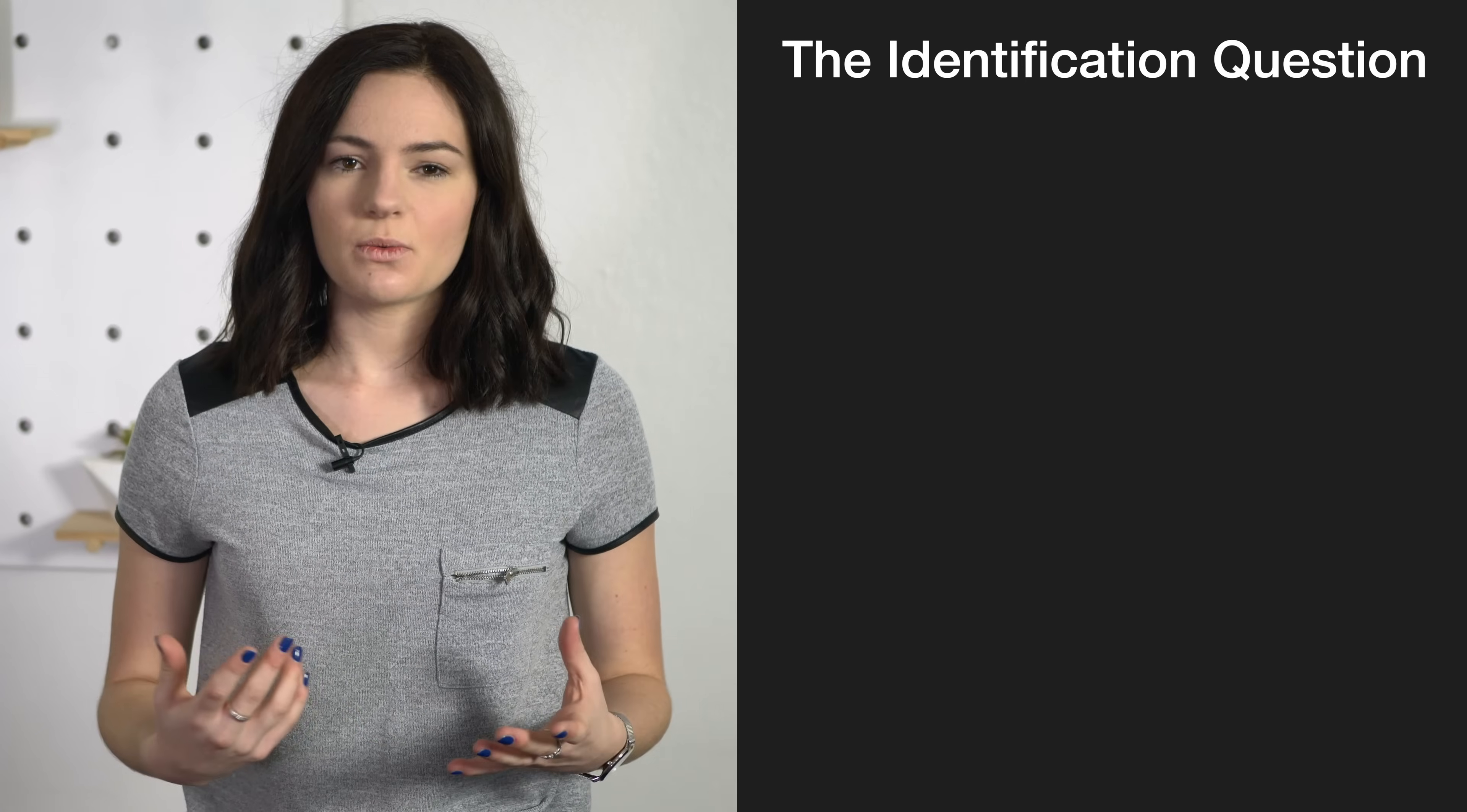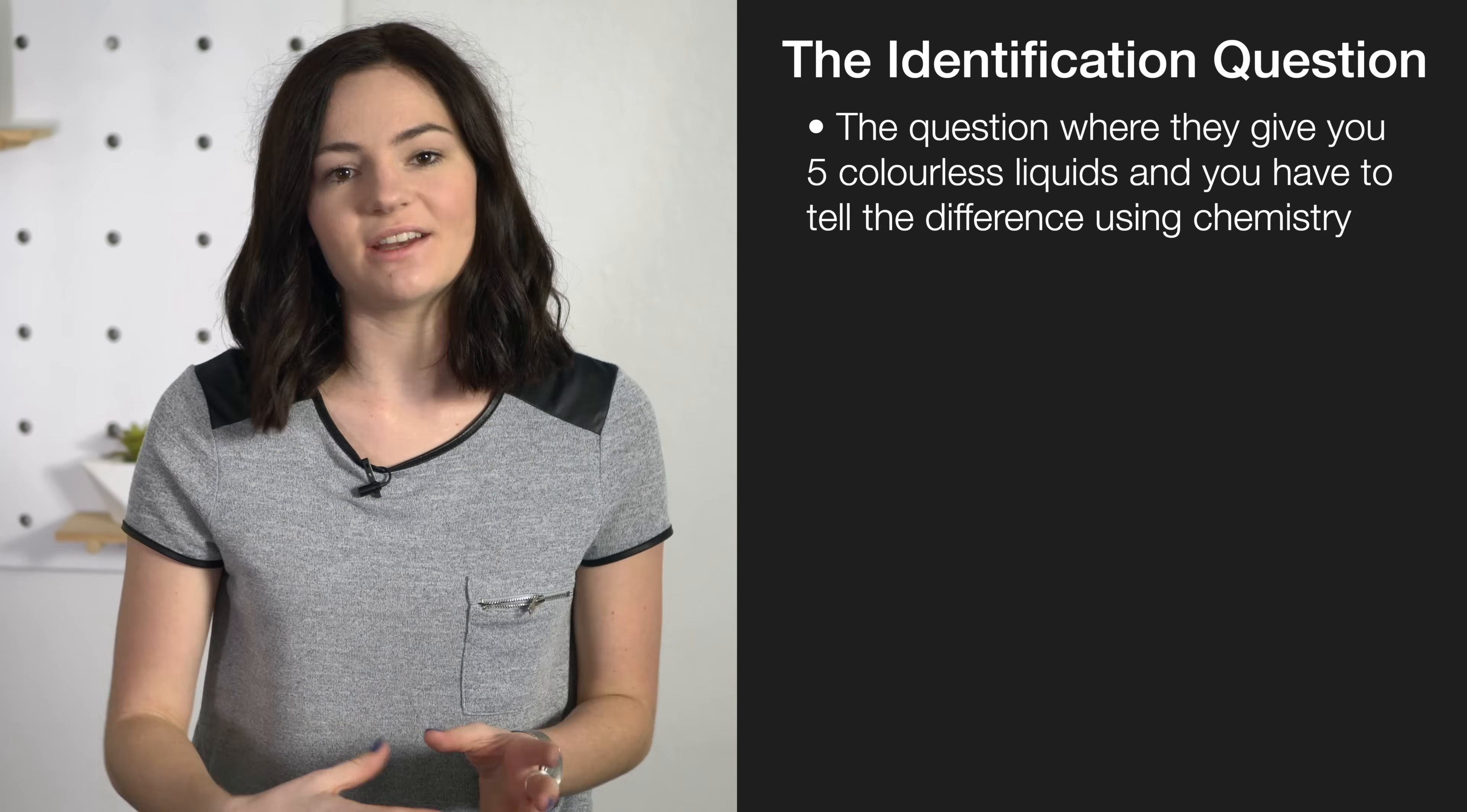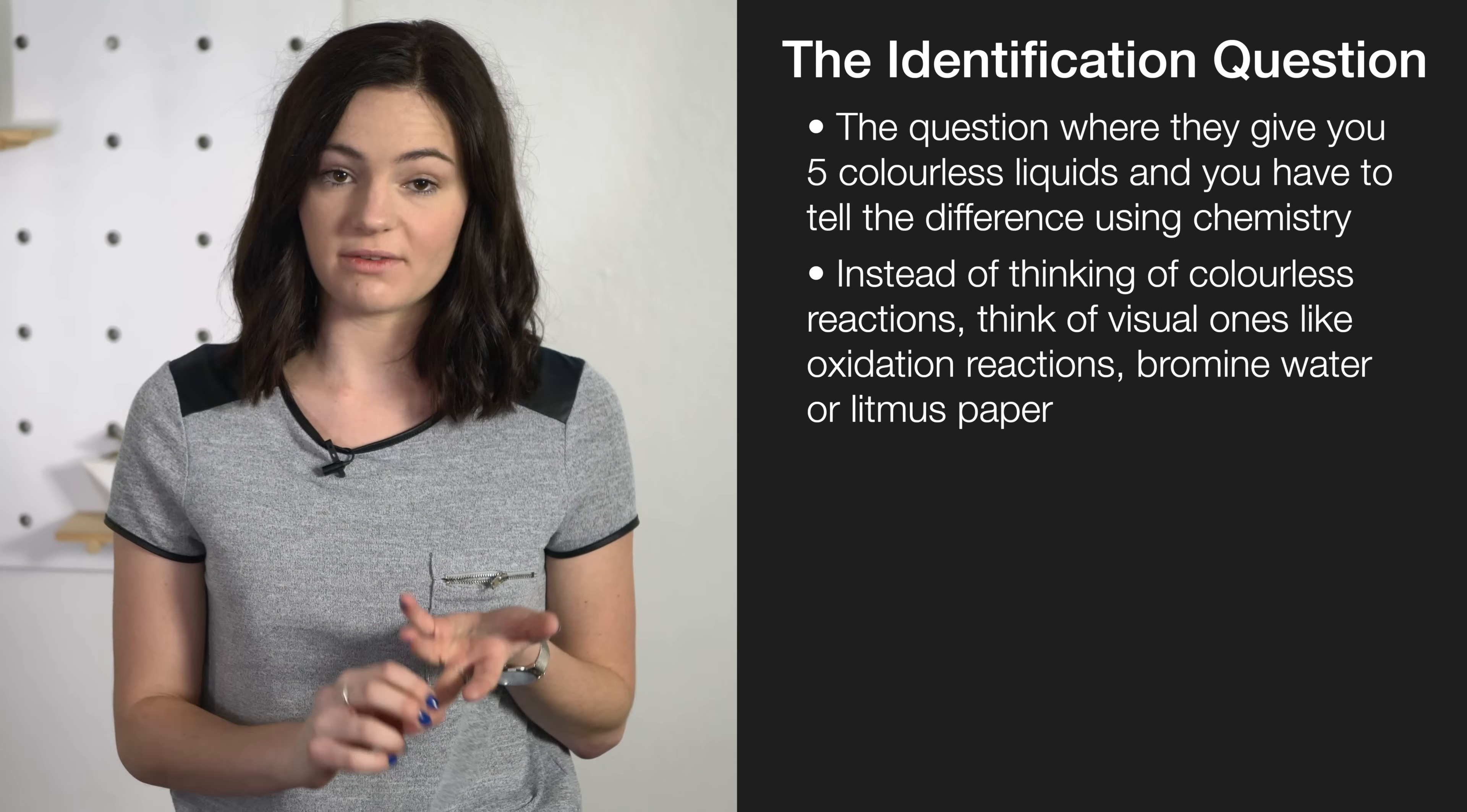Another common question that you will get is the identification question. That's the one where they give you five different liquids and you have to tell the difference using chemistry. So it's quite useful to think of this in a visual way. If you get given one of them as an alkene and you mix it with acidified water, you're going to get alcohol and all of those are colorless solutions. So it's more useful to think of visual things like oxidation reactions, bromine water or even litmus paper.